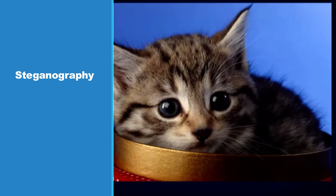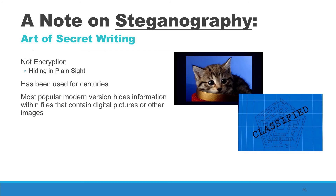Before we end this discussion on encryption, I just wanted to close with one related area of study known as steganography. Steganography is a method by which we hide secret information in plain sight. This is not a method of encryption, but rather it is an entirely different method for protecting information.